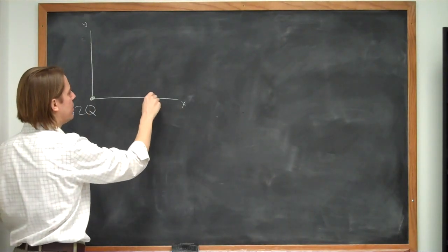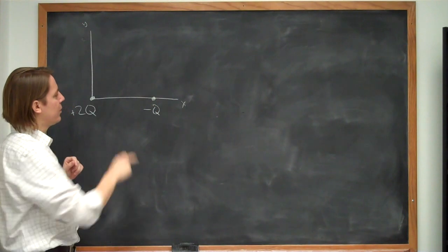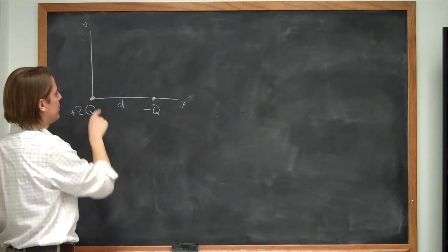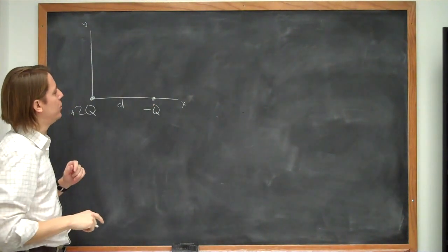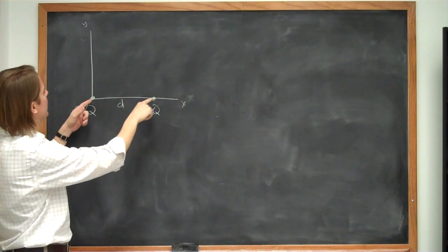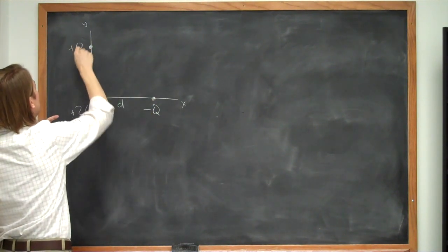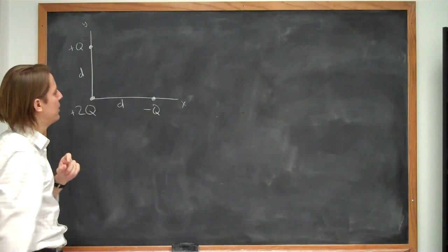Plus we have a charge minus q at a distance, a position d on the x-axis. So we have a distance d to minus q, and we also have a charge plus q at a distance d on the y-axis, the same distance.